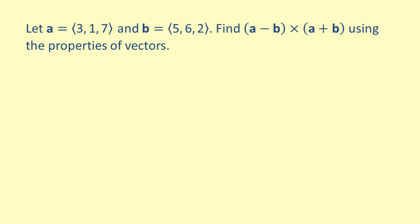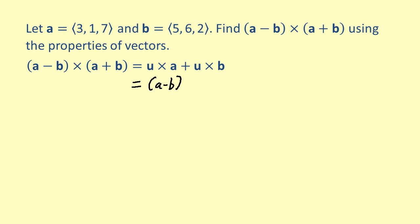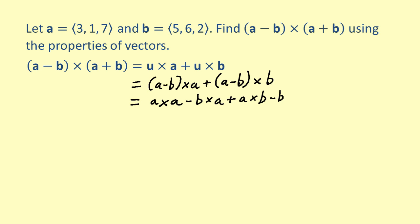Let's use the properties of vectors to find the cross product of the given vectors a and b. We want to find the cross product of a minus b with a plus b. Notice that this looks similar to the distributive property of cross products. Let's consider the vector a minus b to be u. Then we can rewrite the expression as u cross a plus b, and substituting back gives us a minus b cross a plus a minus b cross b. Applying the distributive property again yields a cross a minus b cross a plus a cross b minus b cross b.